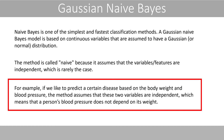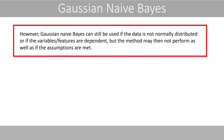For example, if we like to predict a certain disease based on body weight and blood pressure, the method assumes that these two variables are independent, which means that the person's blood pressure does not depend on their weight. However, Gaussian Naive Bayes can still be used if the data is not normally distributed or if the variables or features are dependent, but the method will then not perform as well as if the assumptions are met.